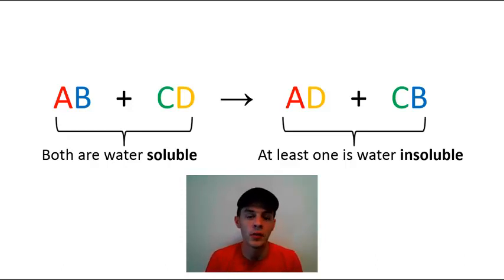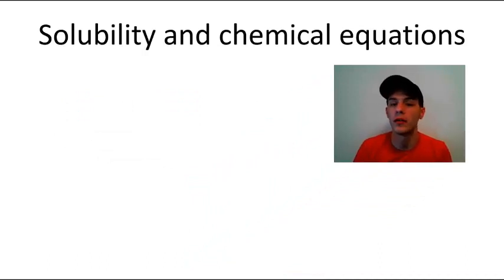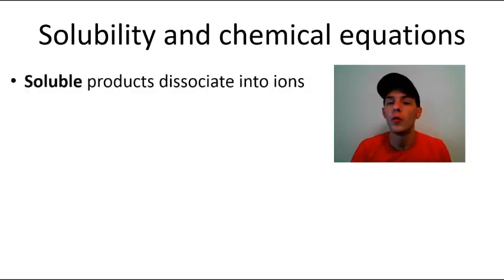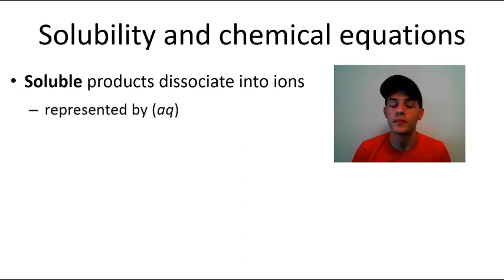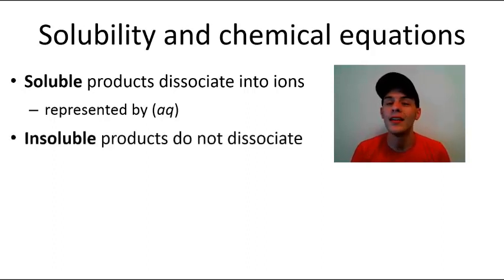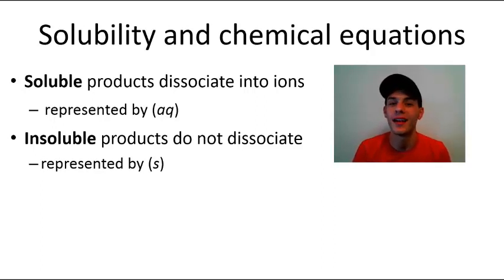It does not dissolve and it turns into this cloudy looking solid that we call a precipitate. Within precipitation reaction equations, if one of your products is soluble in water it's going to dissociate into ions — those ionic bonds are not going to remain intact. Instead you'll have cations and anions freely floating around within the aqueous solution, represented by AQ in parentheses, meaning aqueous. On the other hand, if you have a product that is insoluble in water, those products don't dissociate; the ionic bonds remain intact and we represent them with an S for solid — not soluble, but solid.